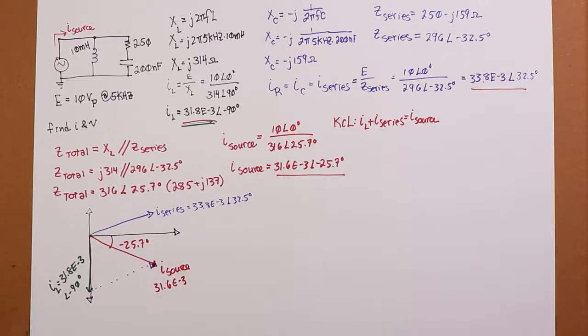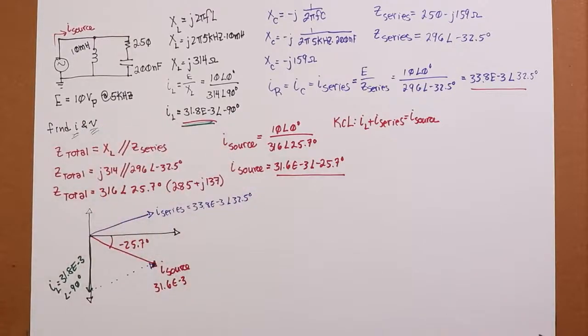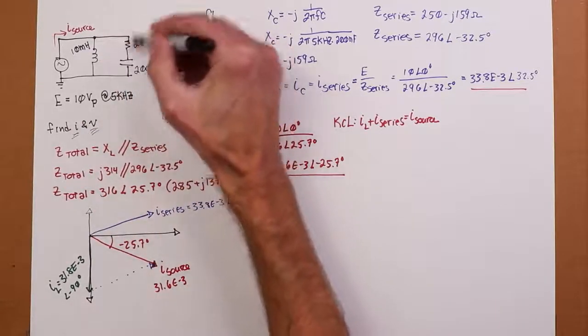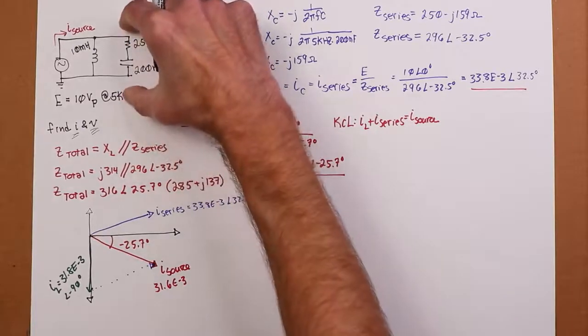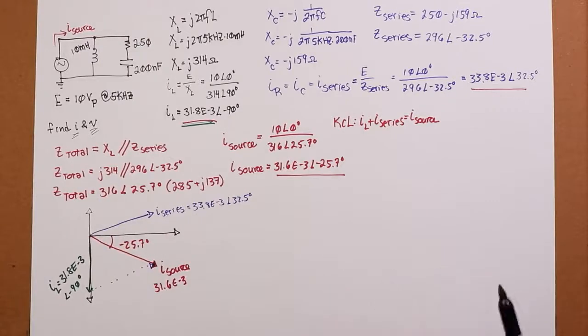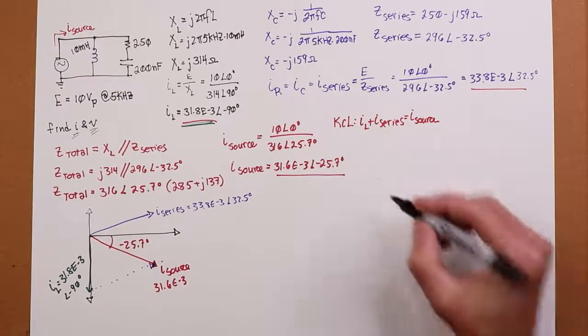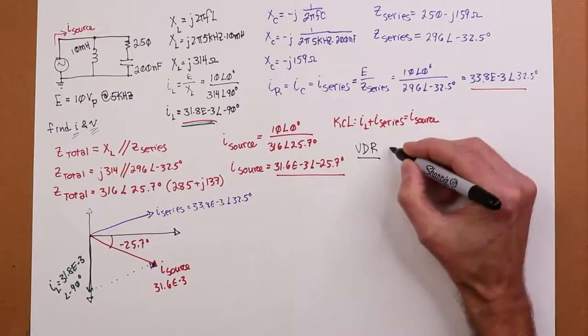So they're actually, the magnitudes on them are all fairly similar. So 33.8 at 32.5 degrees. 33.8, I'm just going to say it's like here. So this is your i series, 33.8 at 32.5 degrees. And then, let's see, for the inductor, I think I'll do that in green so it stands off of the axis here. So that's 31.8. So it's going to be around that big, come on straight down.